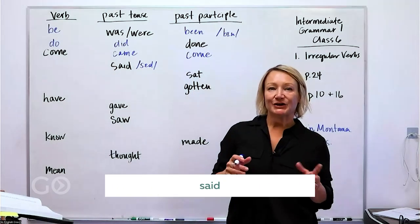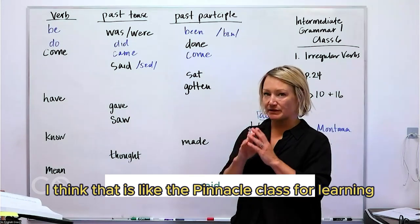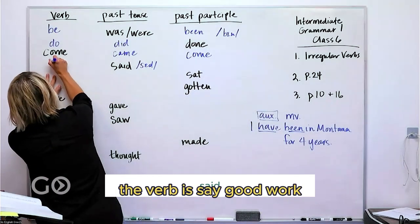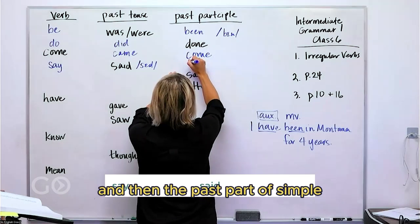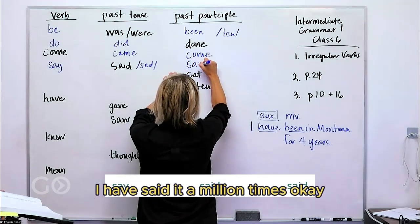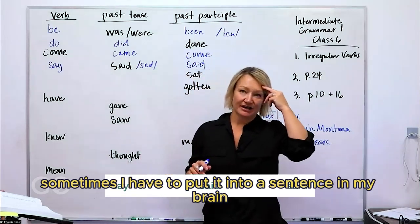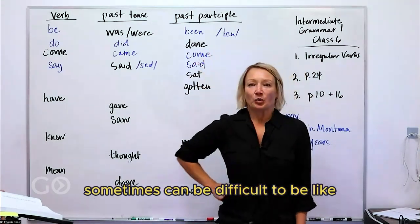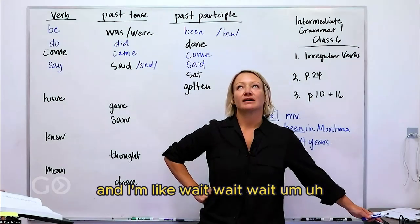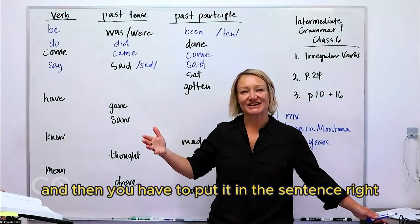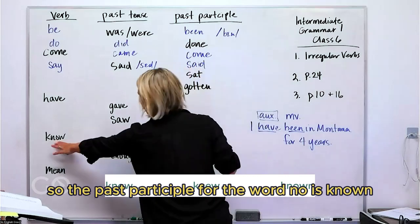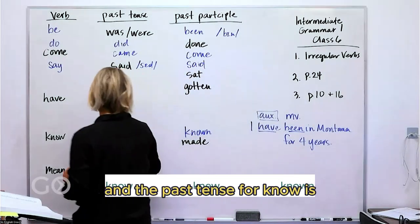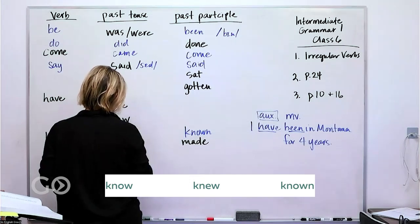If you haven't been coming to my pronunciation class, you should come to that — I think that is the pinnacle class for learning. So going backwards from 'said,' the verb is 'say.' And the past participle: 'I have said it a million times.' Sometimes I have to put a verb into a sentence in my brain to make sure it makes sense. For example, what's the past participle of 'know'? I have to think — 'I have known' — so the past participle of 'know' is 'known.' And the past tense of 'know' is 'knew.'